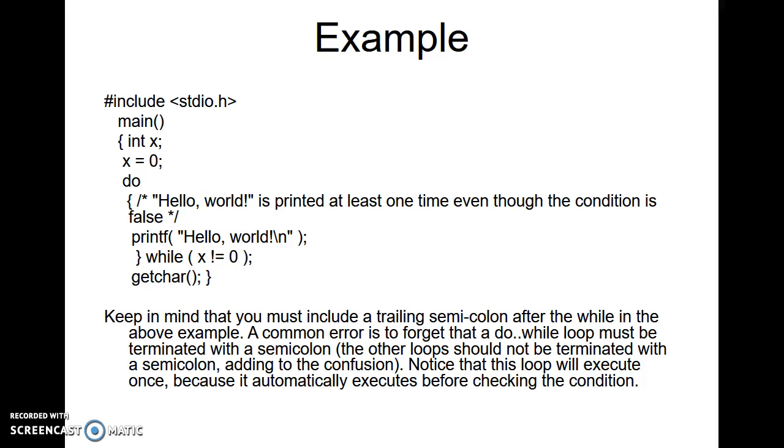This is an example of a do-while loop. Keep in mind that you must include a trailing semicolon after the while. In the above example, a common error is to forget that a do-while loop must be terminated with a semicolon. Notice that this loop will execute once because it automatically executes before checking the condition.